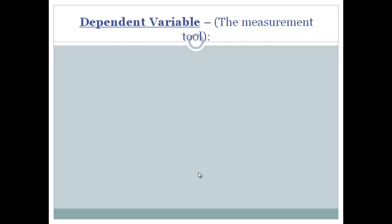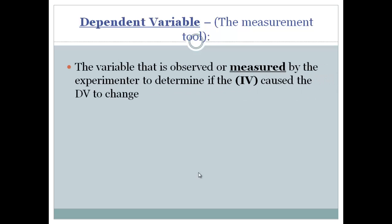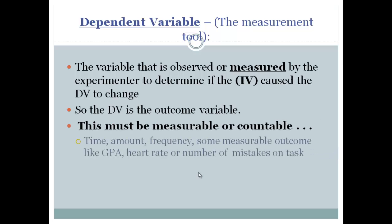The dependent variable, we'll just talk about the DV here. The dependent variable is our measurement tool. This is what we measure. So the experimenter is going to measure this thing to see if it changed because of the independent variable. So the DV is the outcome variable. It has to be countable here, folks. It's got to be something that we can measure specifically.